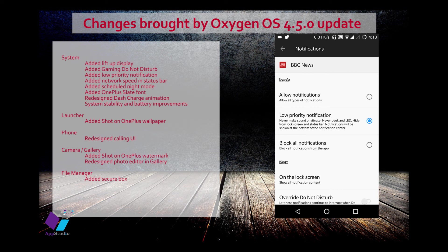With low priority enabled, notifications won't appear on the lock screen or status bar, and will instead be shown at the bottom of the notification center. They will only be visible in the app as a small icon showing pending messages.